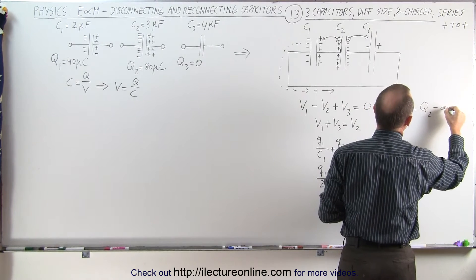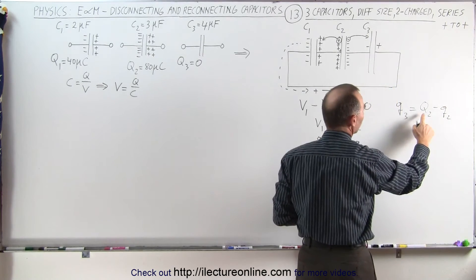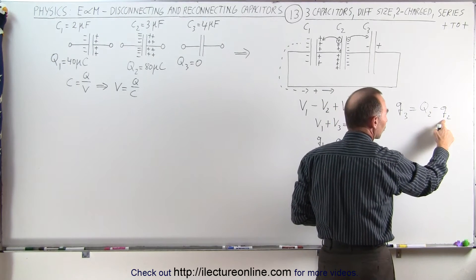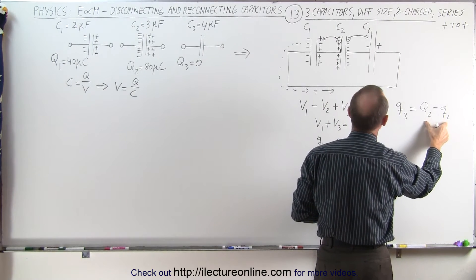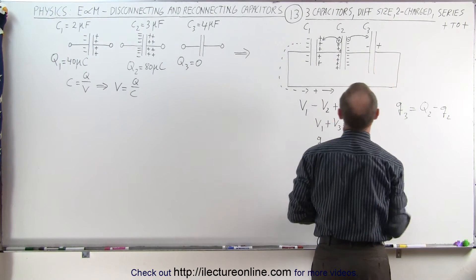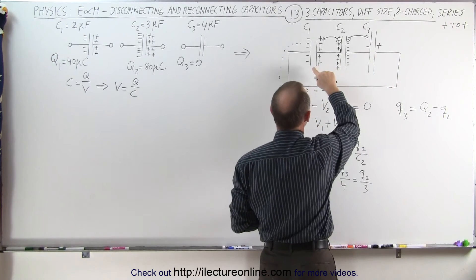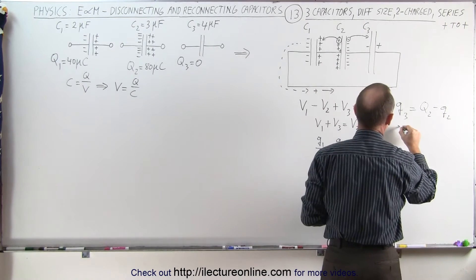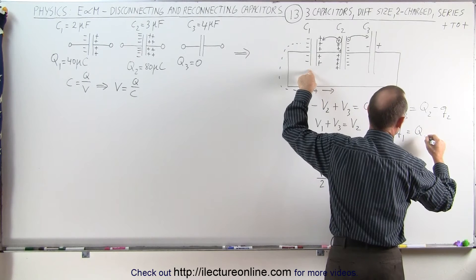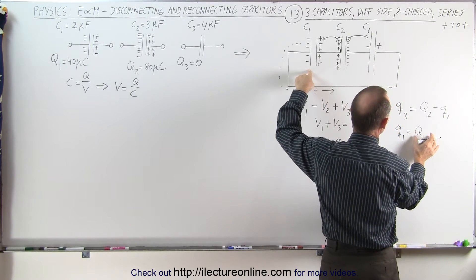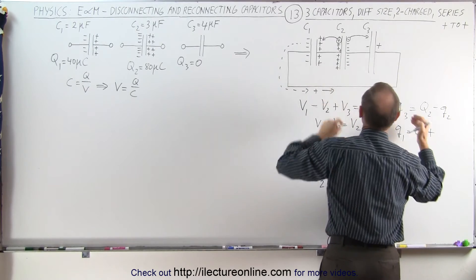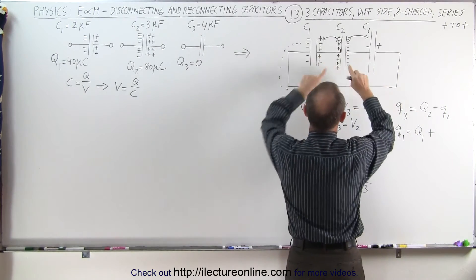This is the starting charge on the second capacitor, and that's the ending charge on the second capacitor. That difference in charge will be the same amount of charge that collects on this capacitor. And the first capacitor, we can say that Q1 will be equal to the charge that it started with, big Q1, which is the initial charge on the first capacitor, plus the charge that leaks off this capacitor.